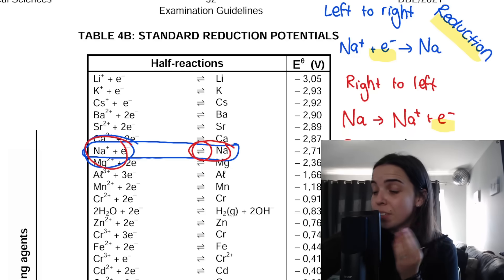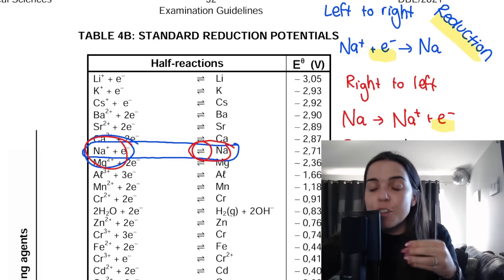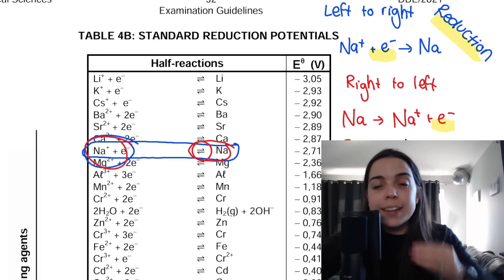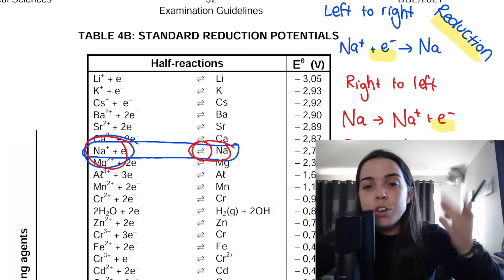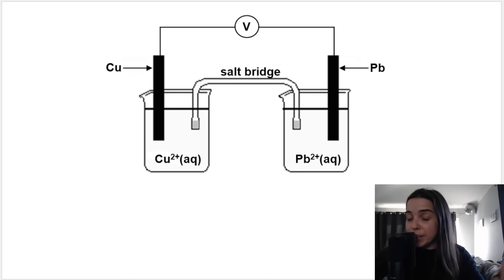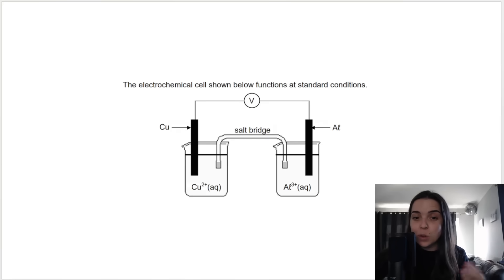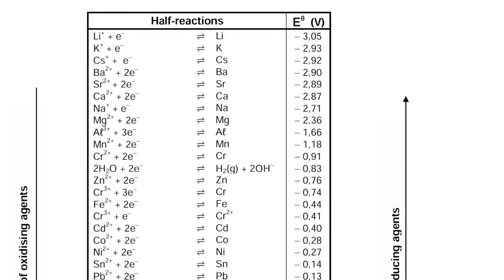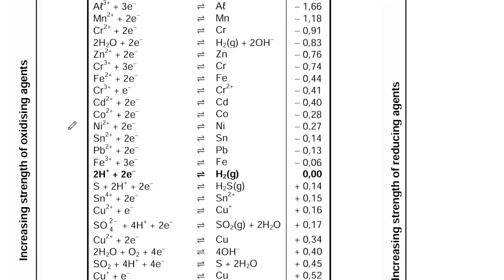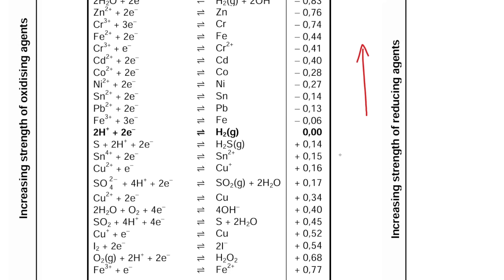Also note that in the table all of these half reactions are written with a double arrow, but when we write an oxidation or reduction half reaction we write it using a single arrow, and the arrow always points to the right. Now, something very important about the table is that it has two arrows. The first arrow is on the right-hand side pointing upwards, indicating increasing strength of reducing agents.